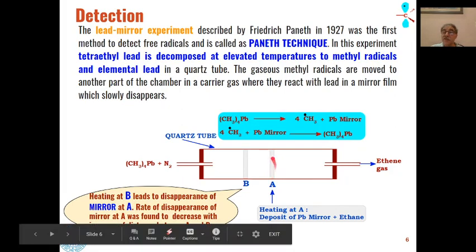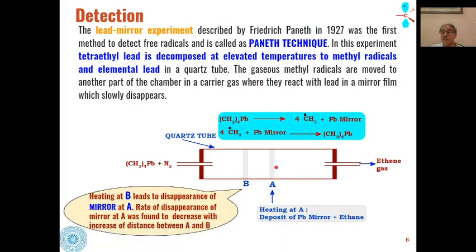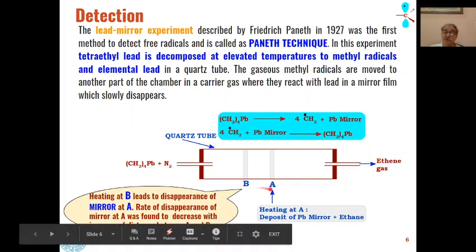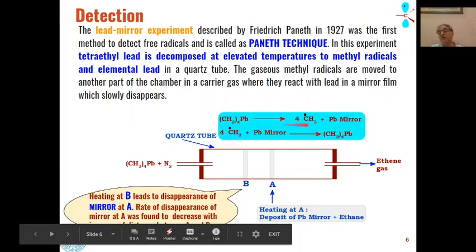When the lead mirror is formed at this place, the methyl free radicals pass along the path, and two methyl free radicals combine with each other to give ethane gas. So when ethane gas is recovered from this point on heating, it confirms this reaction has taken place.